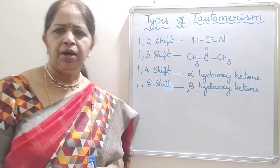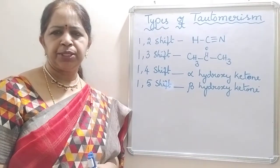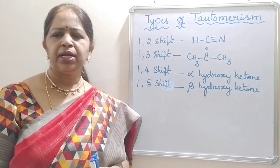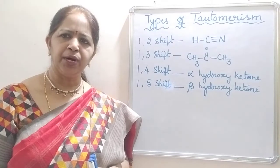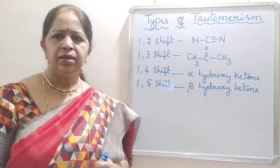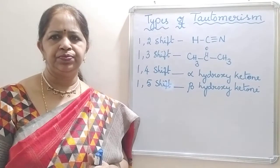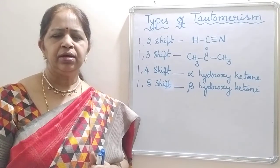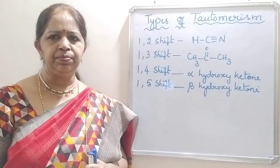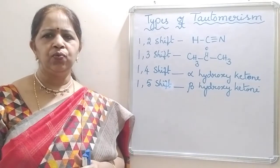Hello students, today let us see the types of tautomerism. Tautomerism arises by the migration of hydrogen from one polyvalent atom to another polyvalent atom in a molecule, within the molecule. Depending on the position from which it migrates to the other atom, these are classified into four types.